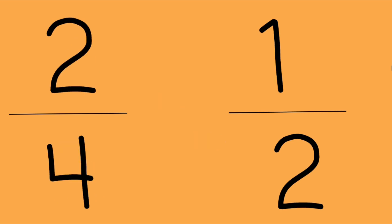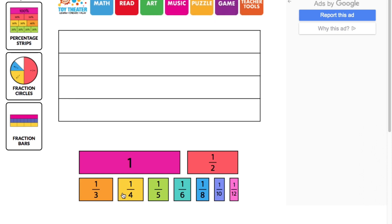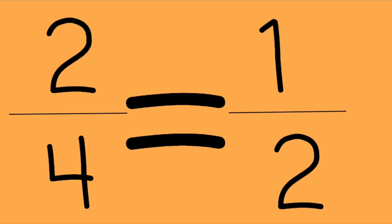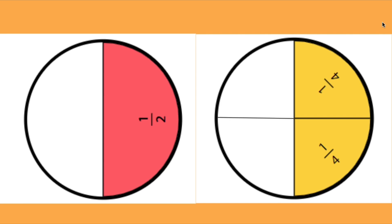Let's look at one more example — two-quarters, or two-fourths, and one-half. Let's take a look at our fraction strips to compare. Two-quarters was our first fraction, so we'll pull two — one, two — and our half. Again, these fractions are equivalent, so we can place an equal sign between them. You may have already known two-quarters was equal to a half because two twos, or two plus two, is four — two is half of four. This is also clearly represented with fraction circles: the circle on the left is divided into two parts and one is colored in; the circle on the right is divided into four parts and two are colored in. But in both cases, half of each circle is colored in.